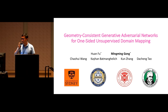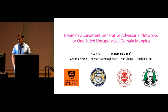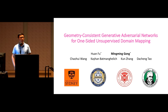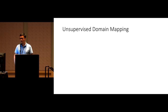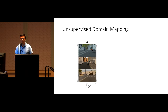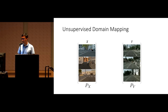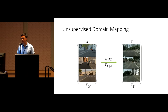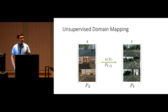Good afternoon, everyone. My name is Ming-Ming Gong. I'm going to present our work on Geometry Consistent GAN for Unsupervised Domain Mapping, a joint work with Huang Fu, Chao-Hui Wang, Kei Han, Bhatia Gresh, Kun Zhang, and Da-Cheng Tao. Unsupervised domain adaptation, also known as unpaired image translation, involves two domains of unpaired images and the goal is to map one domain to the other. Since we're estimating the conditional distribution from two marginal distributions, this is an ill-posed problem — even with infinite sample size, there is no theoretical guarantee we can find the true function.